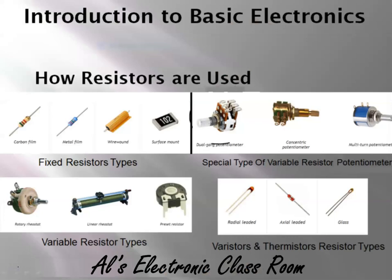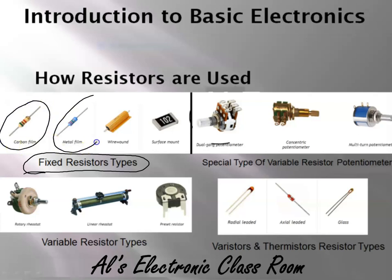On this slide we're looking at some physical resistors. On this side we have fixed resistor types, meaning that the resistance value or the ohmic value is fixed — one value, period. You can't adjust it. We have a carbon film and a metal film resistor — that's the material that the resistor is made of.